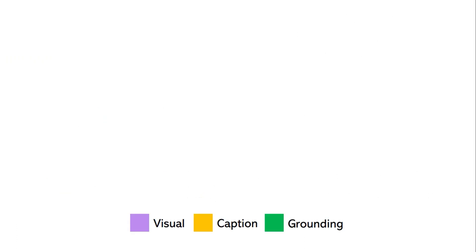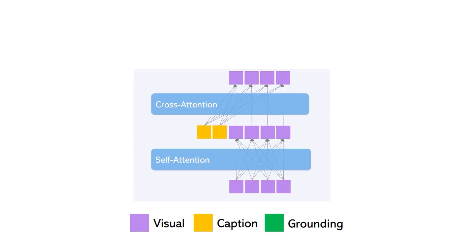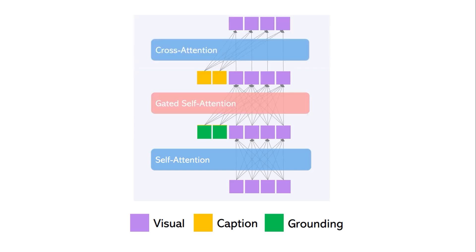Now that we have visual tokens from the image encoder, caption tokens from the CLIP text encoder, and grounding tokens, let's see how we train our diffusion model to add grounding as an additional constraint. In the diffusion model, we have two types of attention: self-attention, which receives visual tokens and generates visual tokens as output; and cross-attention, which receives both caption and visual tokens and generates new visual tokens that encode text information. For our case, we also need to add grounding tokens as extra conditions, so they propose a new module called gated self-attention, placed in the middle. For stable diffusion, the self-attention and cross-attentions are already trained — they keep those frozen and only train this gated self-attention.